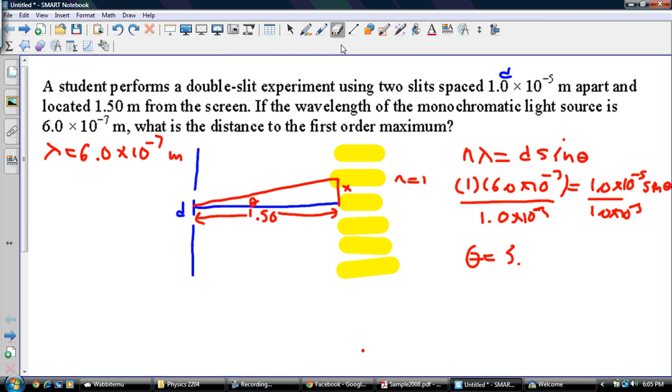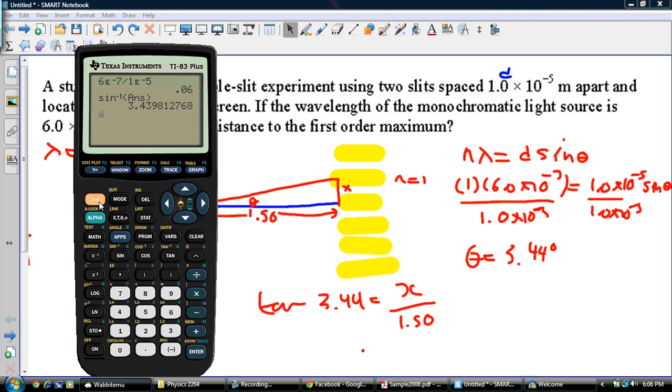So now what I'm going to do, I'm going to solve for my x value here. So tan theta is tan 3.44 is equal to x over 1.5. So now I'm just going to cross multiply here. So I'm going to have x times that. So I'm going to take out my calculator and keep my numbers in here. So tan of my answer times 1.50 and enter.